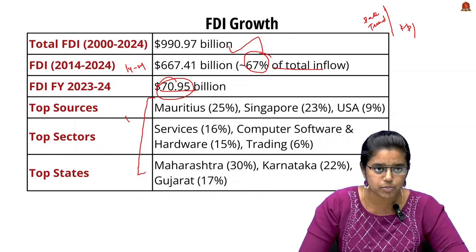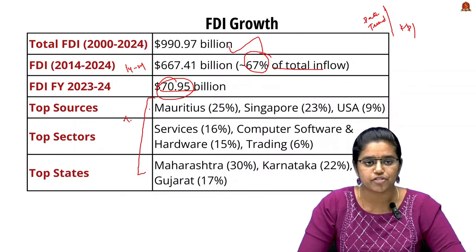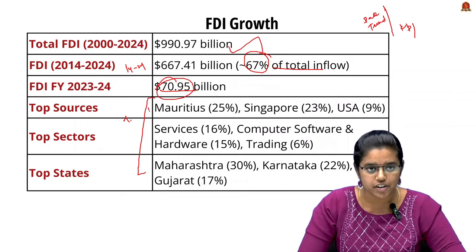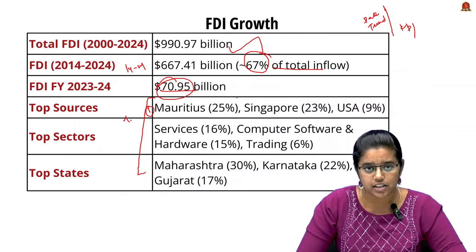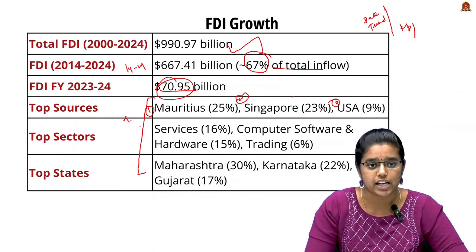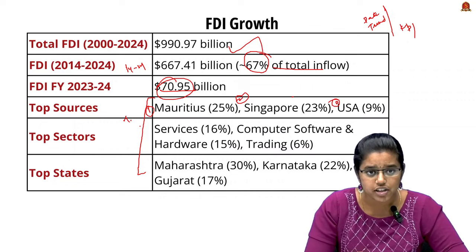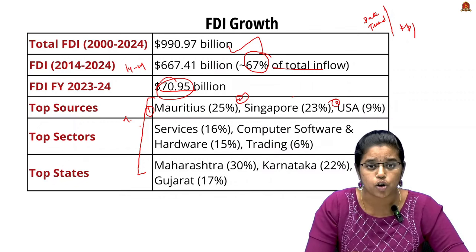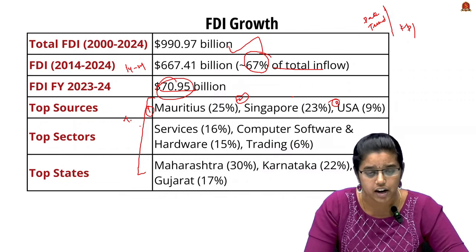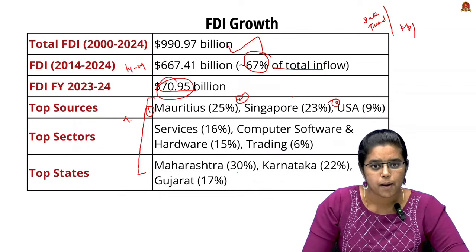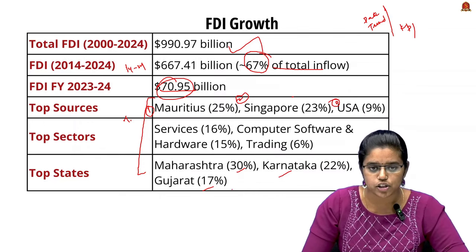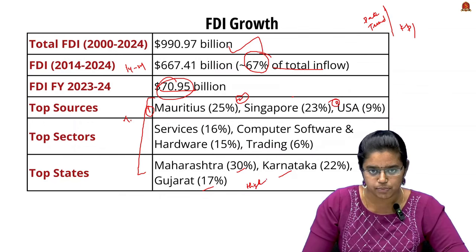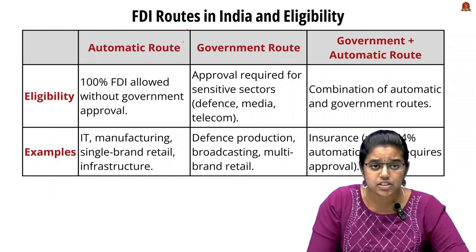The top sources of FDI in India are first Mauritius, second Singapore, and third the US. The top sectors receiving FDI are services, computer software and hardware, and trading. Maharashtra, Karnataka, and Gujarat are the top states receiving high FDI investment. There are three main categories through which FDI can be established in India.